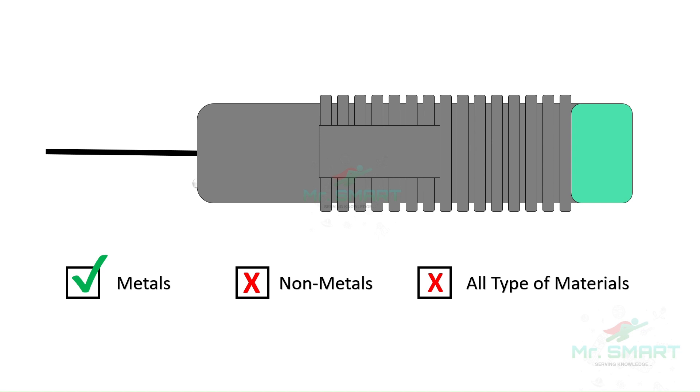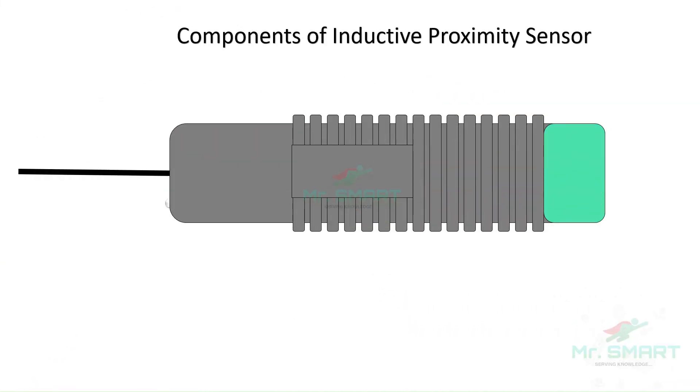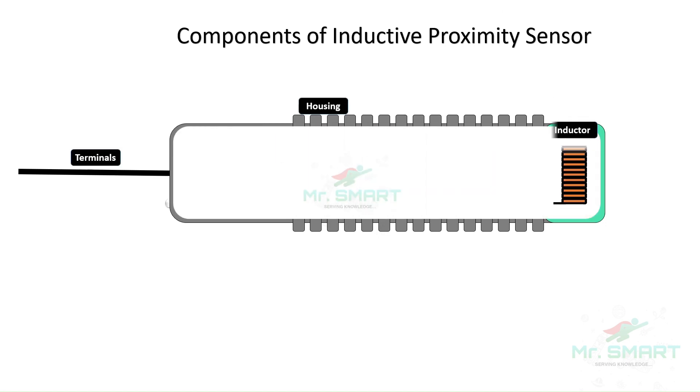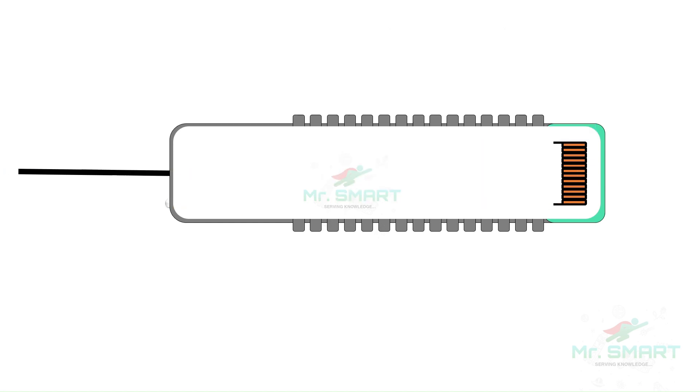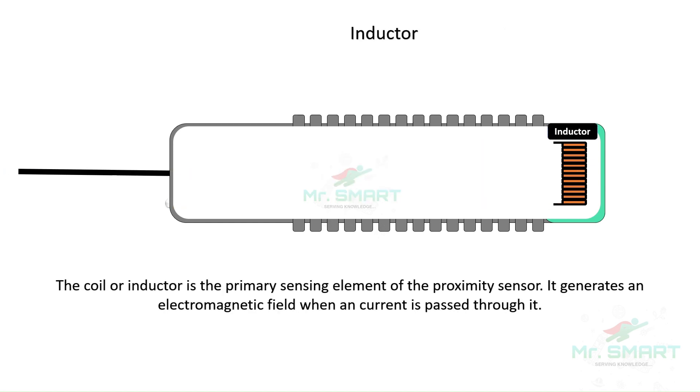The major components of an inductive proximity sensor are housing, terminal wires, coil or inductor, oscillator circuits, detection circuits, and an output circuit. The inductive proximity sensor has a coil or inductor, which is the primary sensing element.